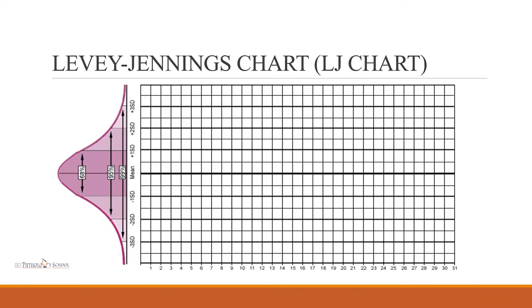The LJ chart is based on a normal Gaussian distribution curve. The central line on the x-axis represents the mean, with plus and minus 1 SD, plus and minus 2 SD, and 3 SD on either side. When values are plotted on the LJ chart, they should lie within plus or minus 2 standard deviations. The confidence intervals are 68% for 1 SD, 95% for 2 SD, and 99% for 3 SD respectively.